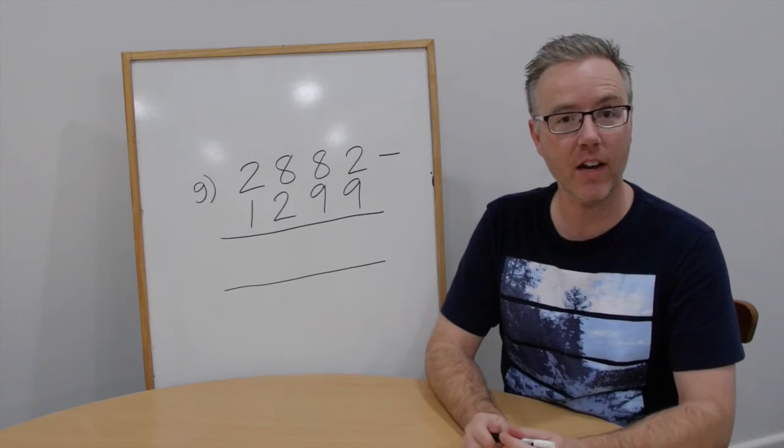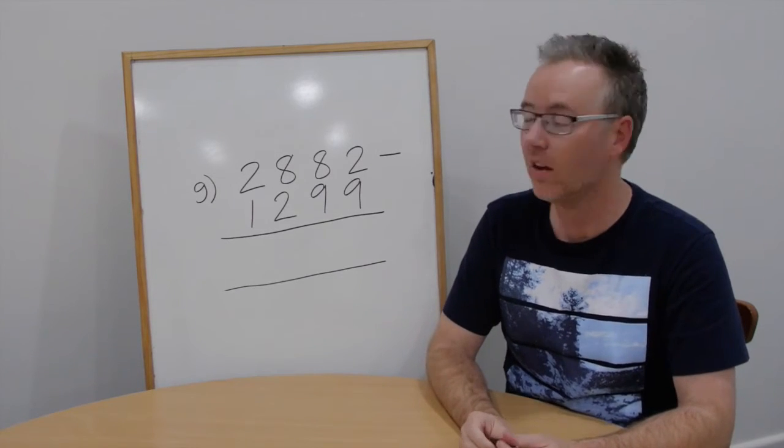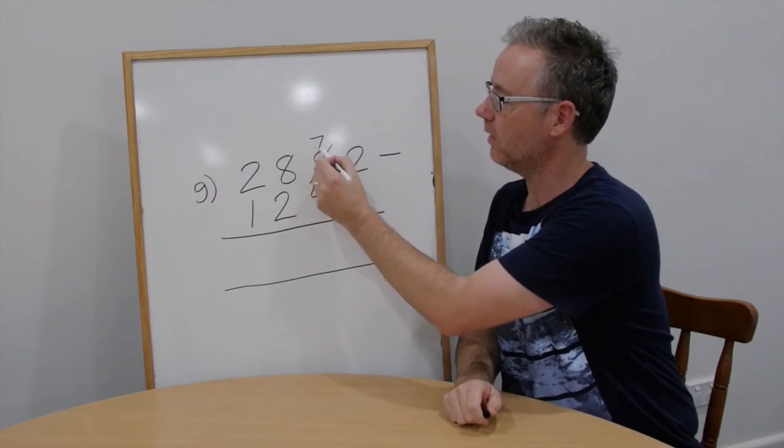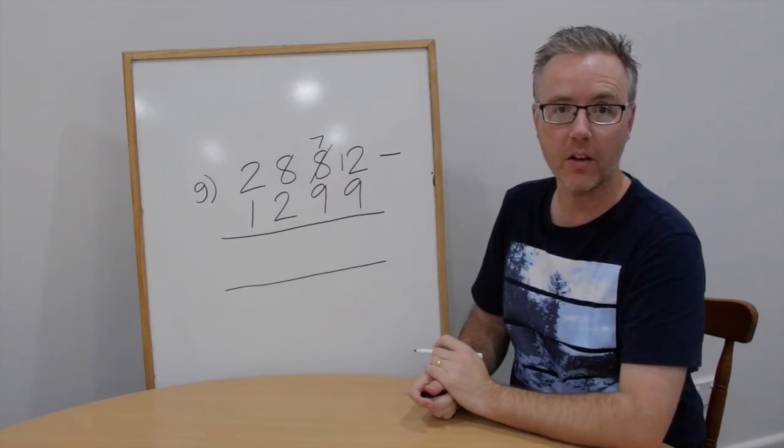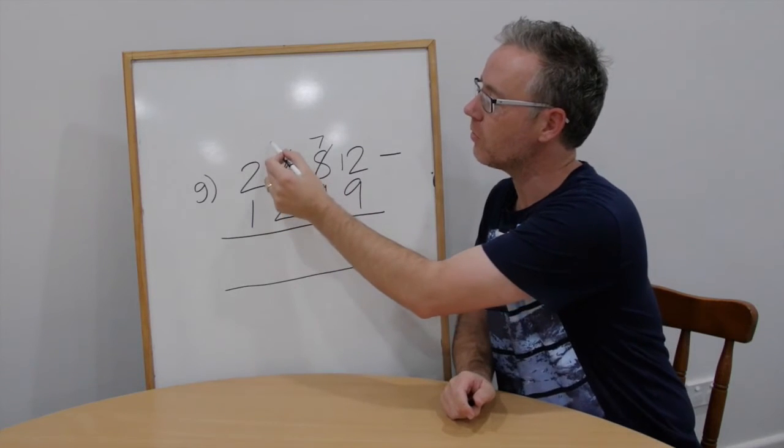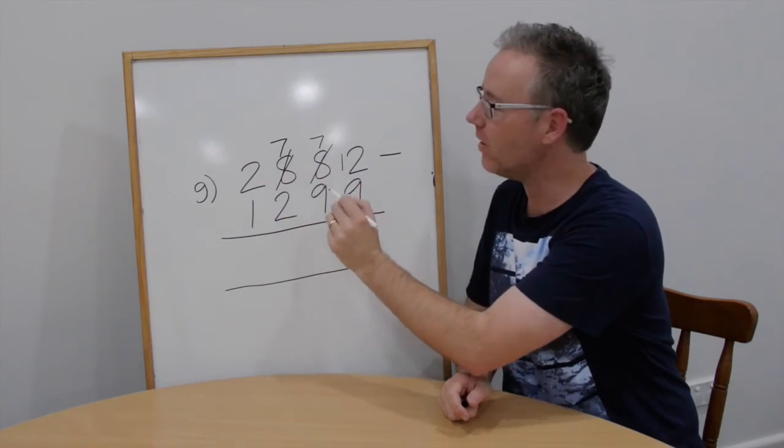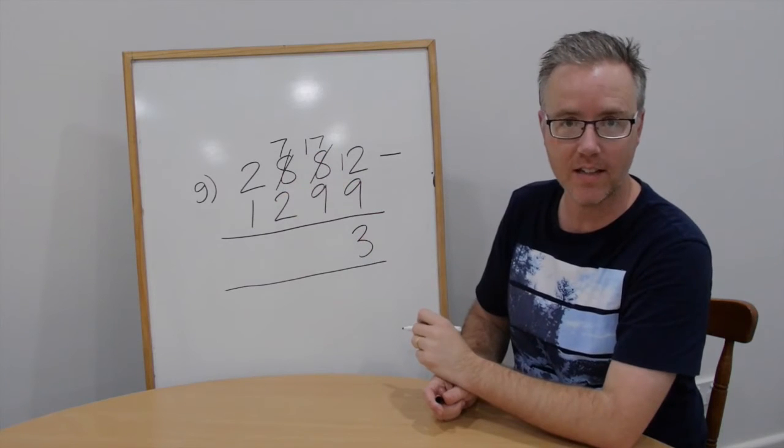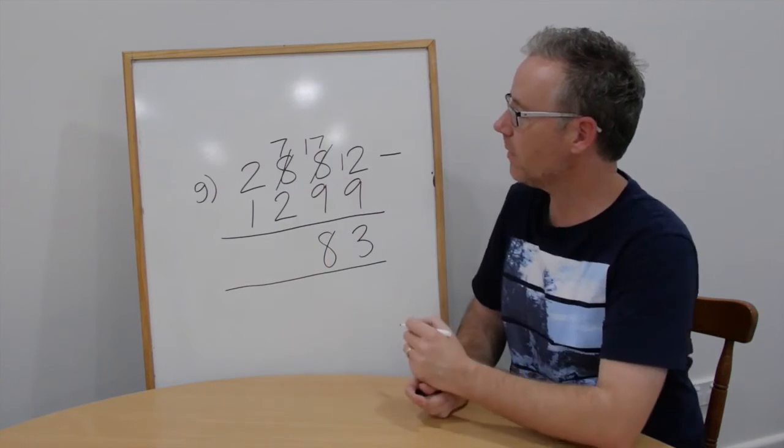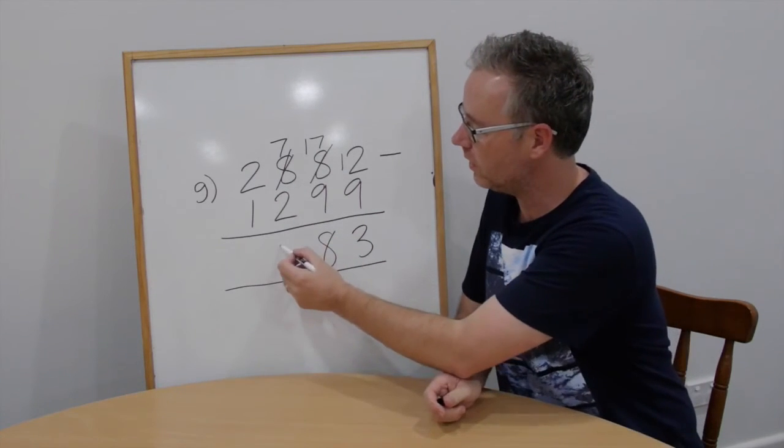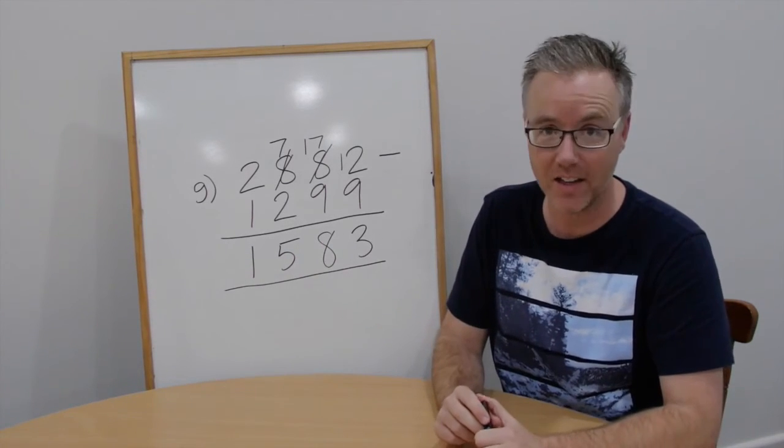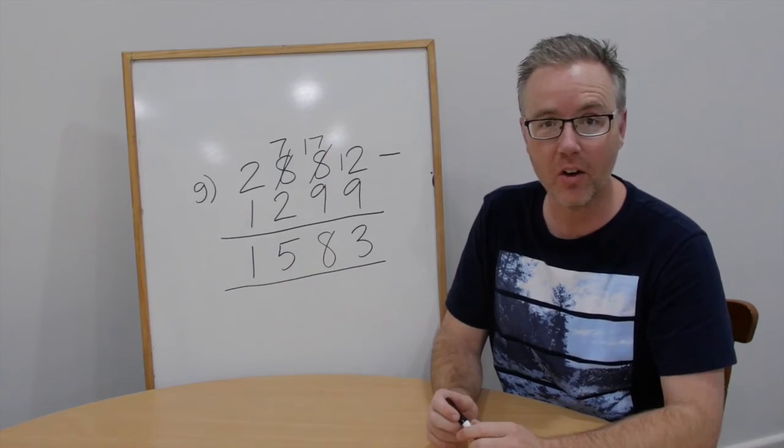Question G. 2,882 take away 1,299. 2 take away 9 we can't do. 12 take away 9 is 3. 7 take away 9 we can't do. Trade. We now have 700 and we bring those 10 across to the tens, ten tens. We now have 17 take away 9, it's 8. 7 take away 2, 5. And 2 take away 1 is 1. Answer, 1,583. One more to go. Check your estimate.